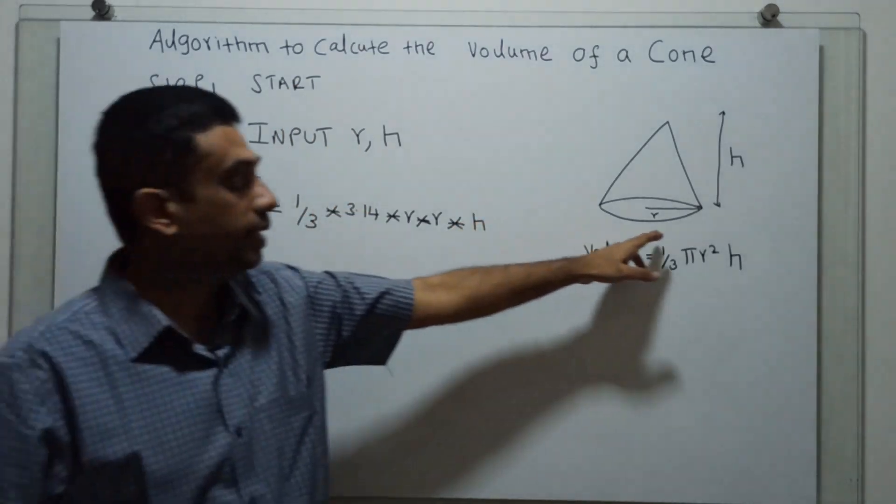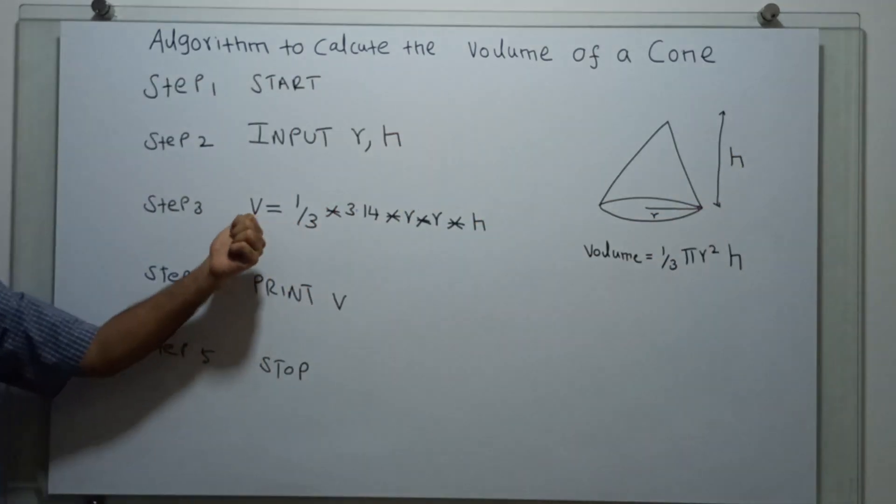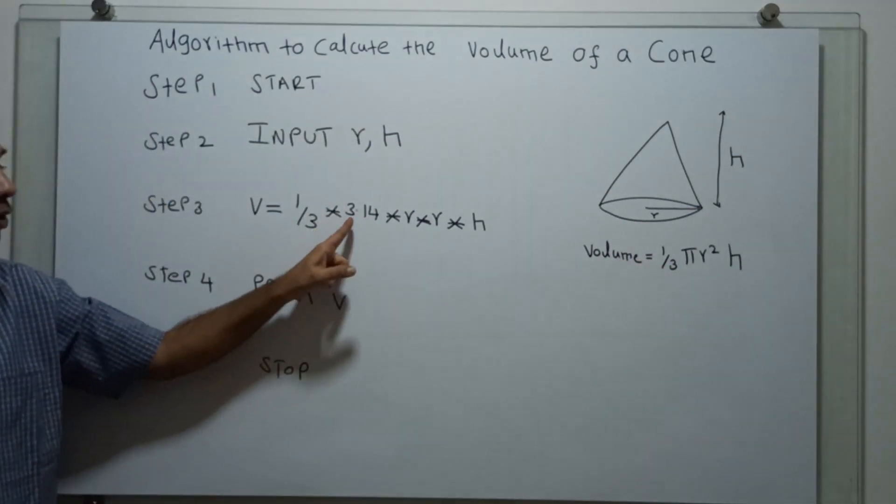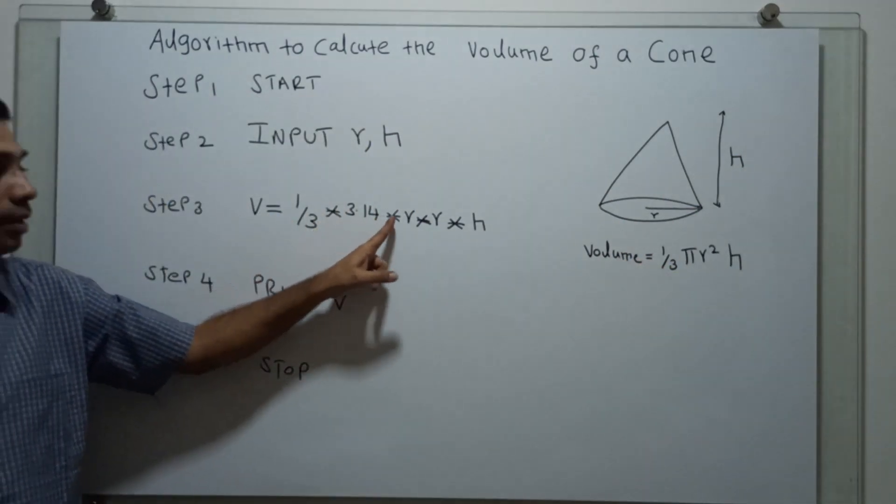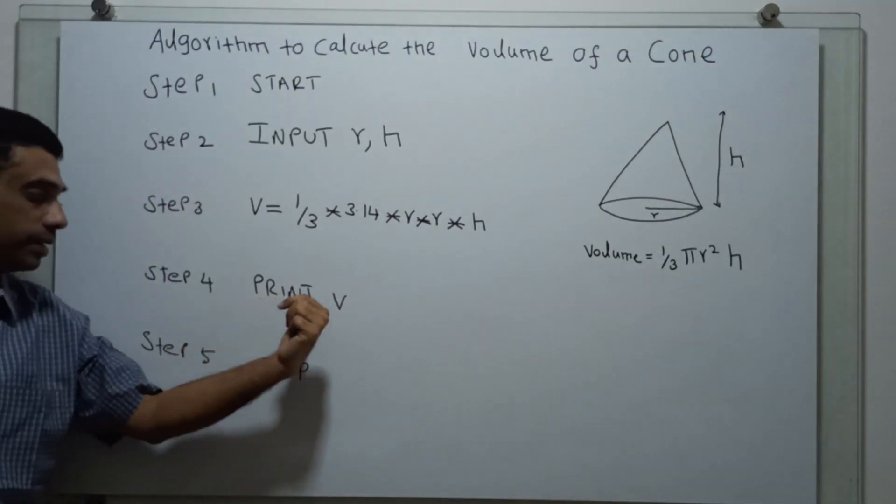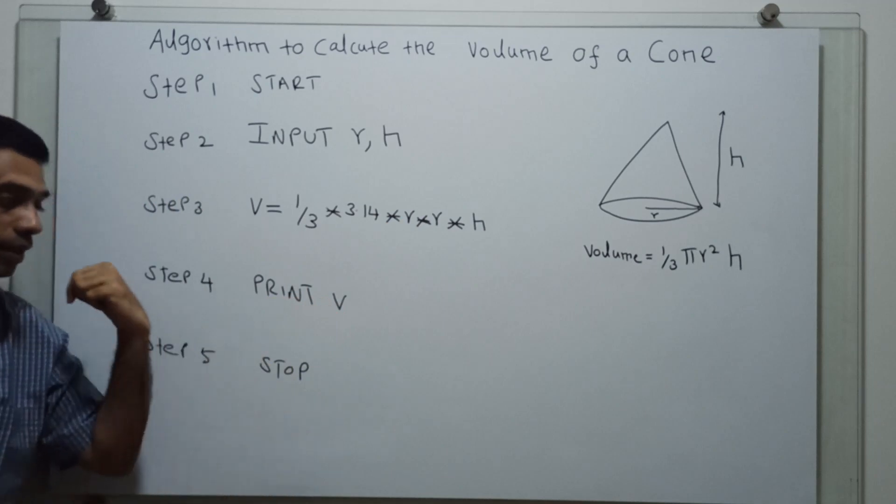So we have taken the input, the radius and the height. We calculate the volume by using the formula 1 by 3 pi r square h, 1 by 3 into 3.14, the value of pi, r square into r into r into h. Then we printed this result, and this is the end of the algorithm.